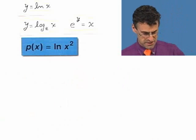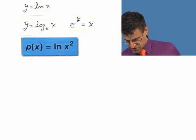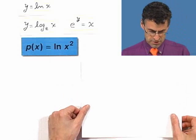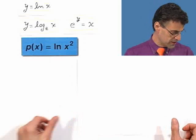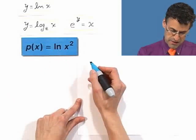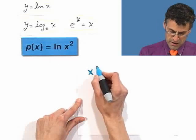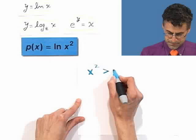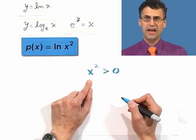Let's try one more together, just for fun. So let's try to find the domain of this crazy function, p of x equals the natural log of x squared. The natural log of x squared. So what are the allowable values? Well, remember the rule. The rule is that I can only take the natural log, or any log, of positive values.